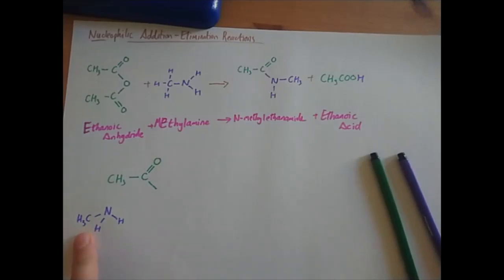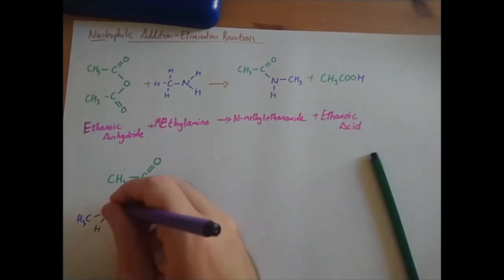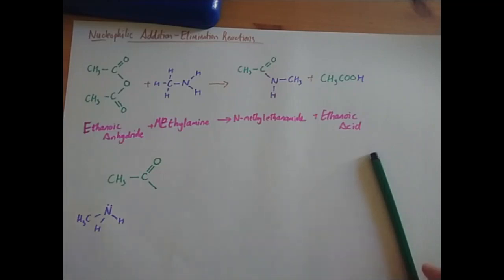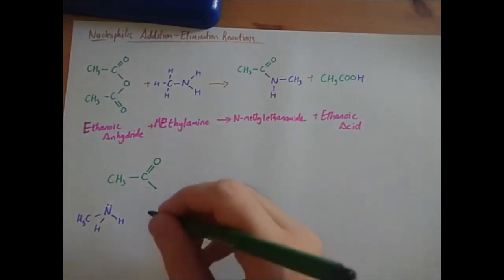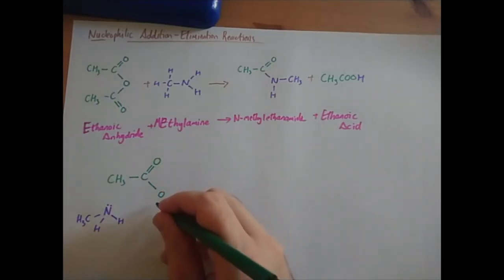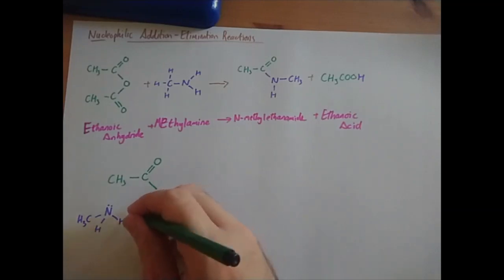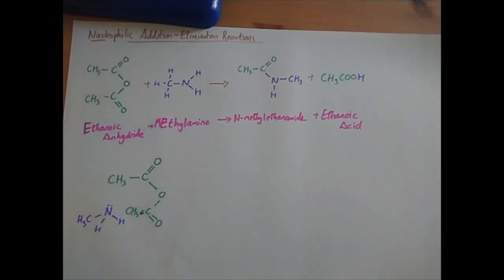So rather than the H, I've got CH3. That's all the difference. I've still got the lone pair, so the mechanism is going to be identical. And rather than having a chlorine here, I'm going to put the rest of my ethanoate group.